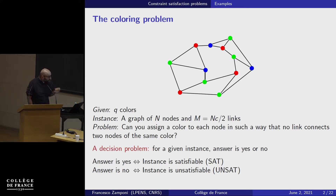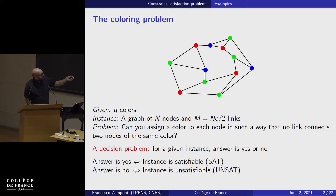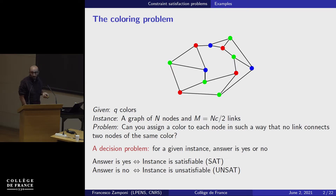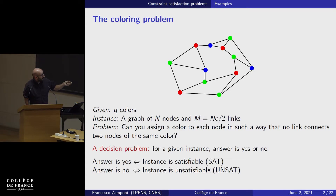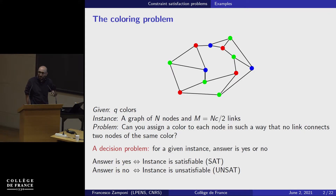I will give you three examples instead of a general definition. The first example is the problem of coloring graphs. You have a graph with nodes and links, and you want to put colors on the nodes — say three colors: blue, red, and green. You have n nodes and m links connecting them. The question is: can you assign a color to each node such that no link connects two nodes of the same color? This is called the decision problem, because you have to decide if it's possible or not.